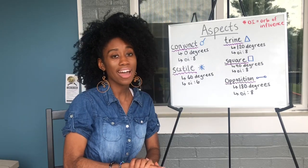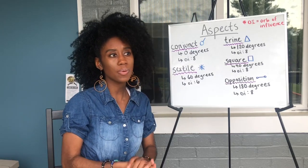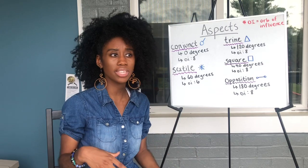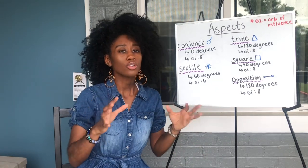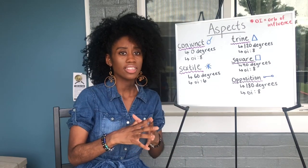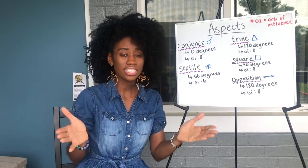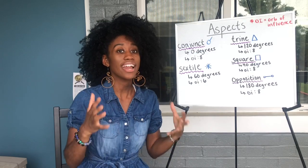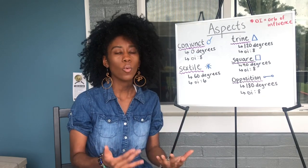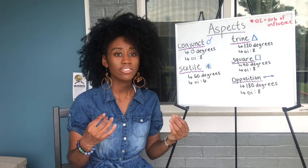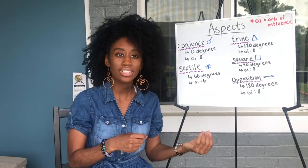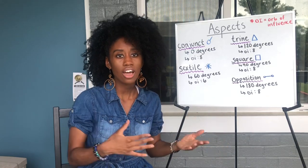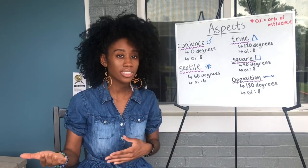Today we're going to be talking about aspects. Aspects are what make the planets talk to each other. Those planets, depending on their distance away from each other, create aspects. And aspects are what differentiate one person of the same sign from another person of the same sign.